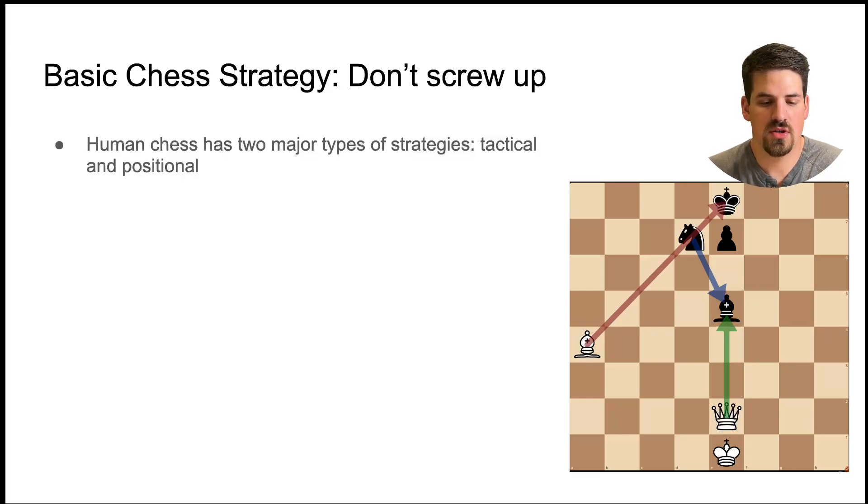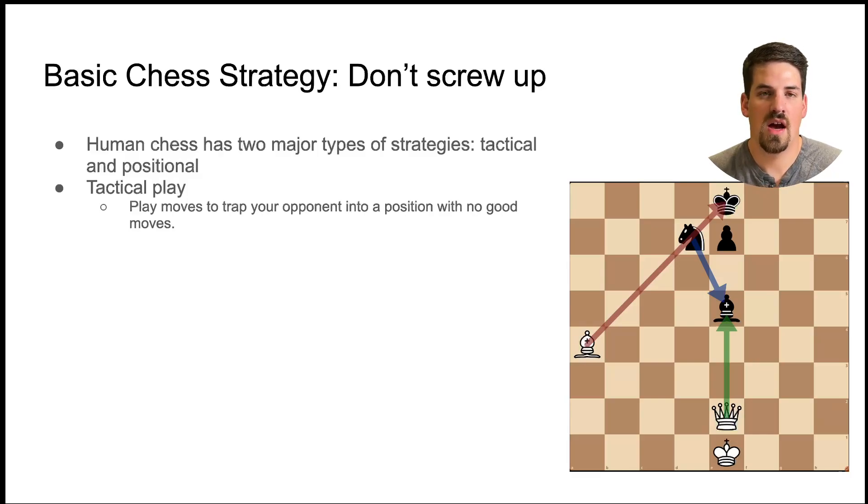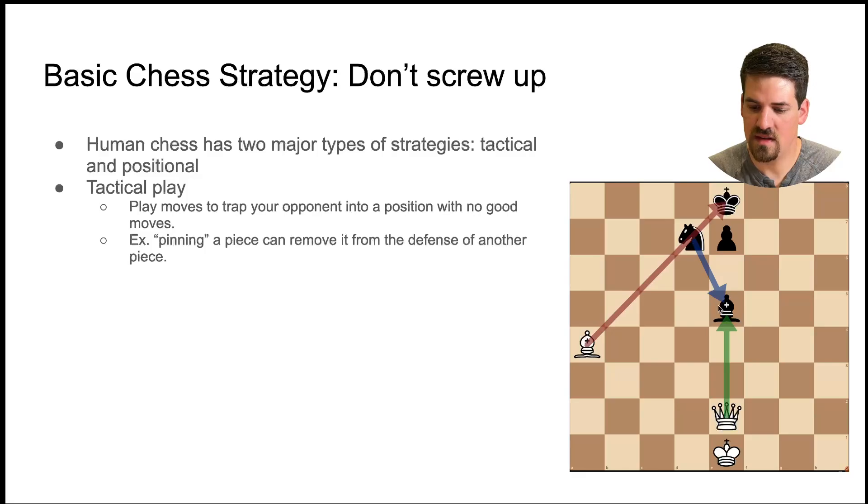When humans play chess there's two major strategies, tactical and positional strategy. Tactical play is based on playing moves that either trap your opponent or put them into a position where good moves are hard to find or there are no good moves. An example is something called a pin. So you can see in this diagram here the white bishop is seeing the king through this knight. So although it appears that the knight is defending the black bishop, the queen can attack the black bishop and the knight is unable to recapture the queen because of this pin. So a pin can cause the situation where it appears that the black knight is protecting that bishop but in fact it isn't because of the pin. So that would be an example of a tactical situation.